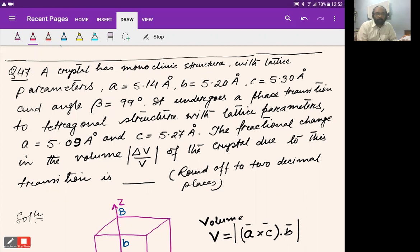Question number 47 is about phase transition from one crystal structure to another. The problem states: a crystal has monoclinic structure with lattice parameters a = 5.14 Å, b = 5.20 Å, c = 5.30 Å, and angle